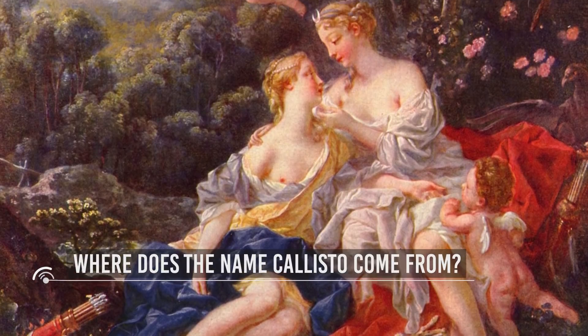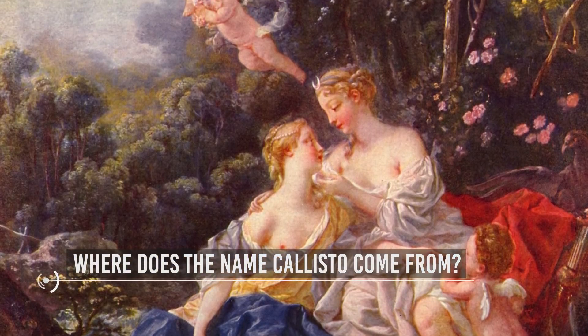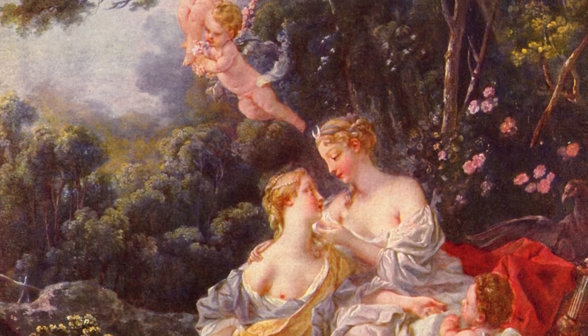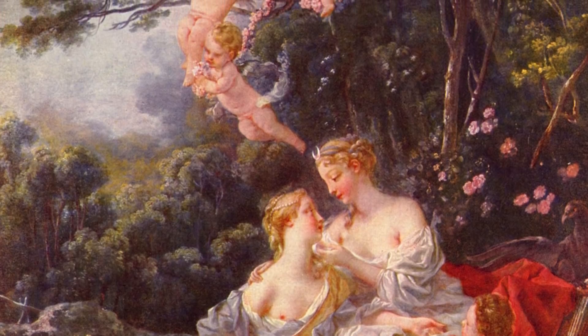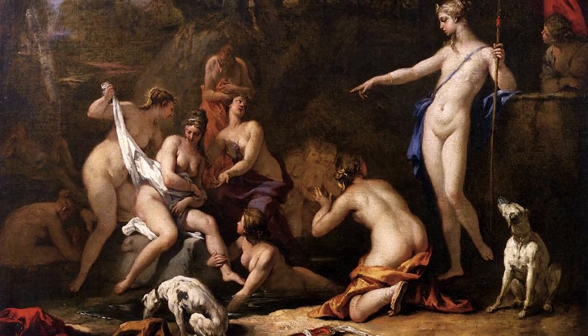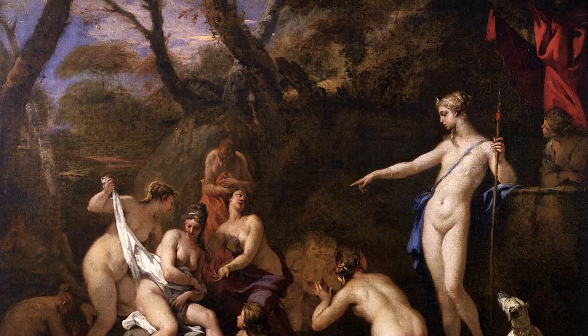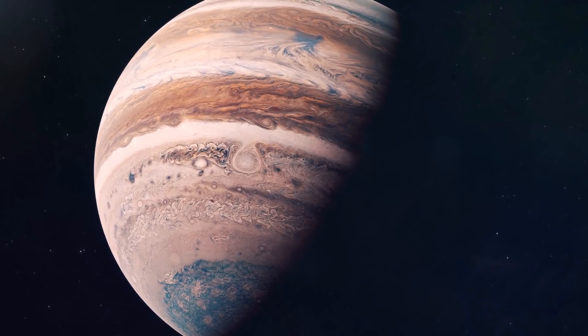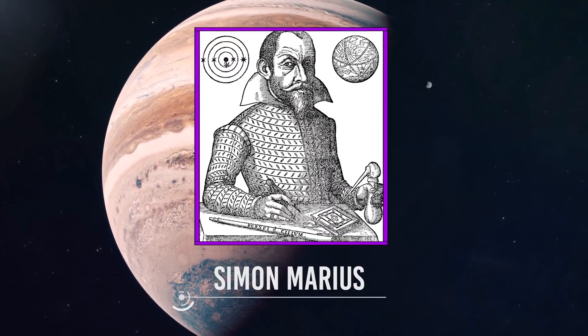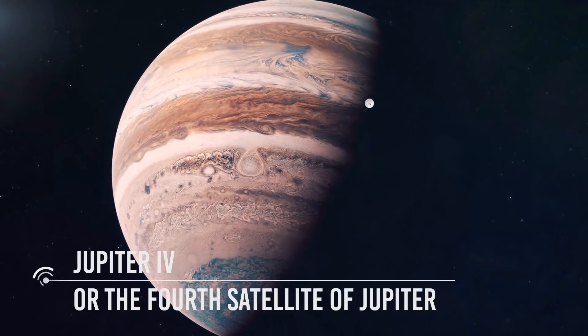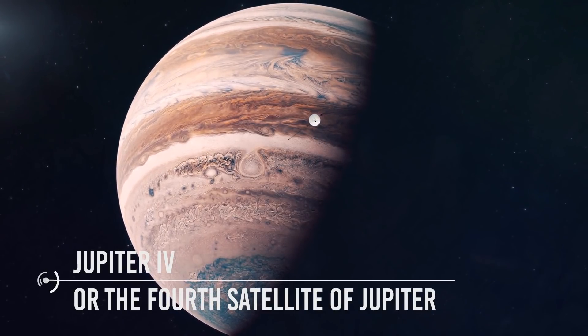First things first, where does the name Callisto come from? Well, you should know that according to Greek mythology, Zeus had many lovers. Callisto was one of them. She was a nymph, a beautiful being associated with the goddess of the hunt, Artemis. The name was once again suggested by astronomer Simon Marius, but it was not in common use until the mid-20th century. Before that, they used to call it Jupiter 4, or the fourth satellite of Jupiter.